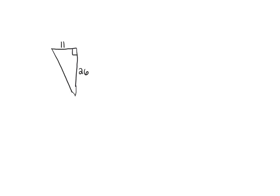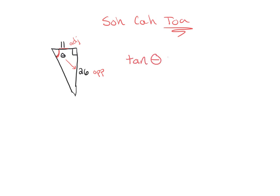Let's do an example. Draw your right triangle — this side length is 11 and this side length is 26 — and we want to find an angle measure. In relationship to this angle, we have the opposite side and the adjacent side. Opposite and adjacent in SOH-CAH-TOA is going to be tangent, so tan of your angle equals opposite over adjacent.